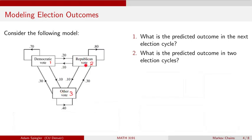Similarly, if a voter votes for a Republican in this election, they have an 80% chance of voting for a Republican candidate again, a 10% chance of voting for a Democratic candidate, and a 10% chance of voting for somebody who is neither Democrat nor Republican.